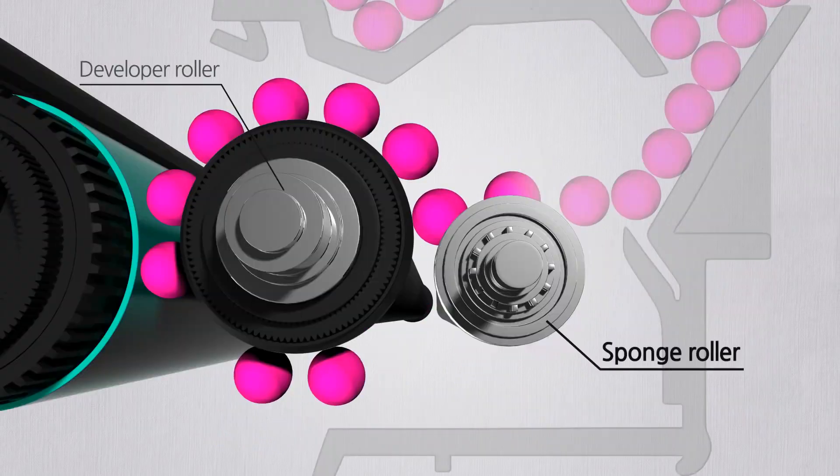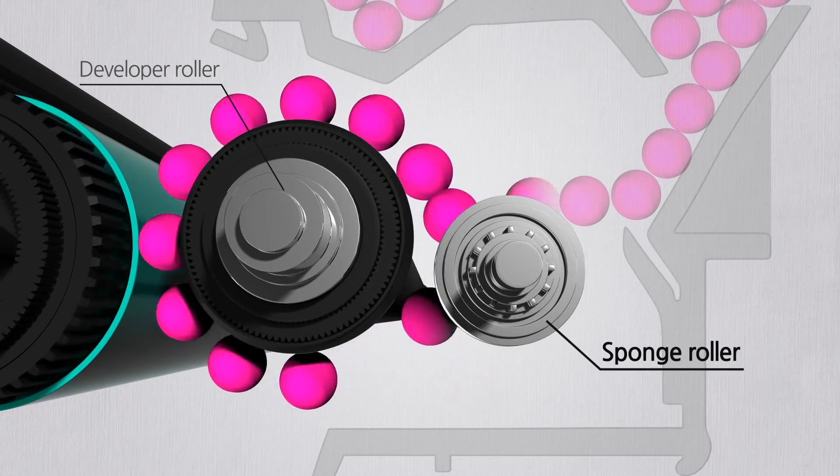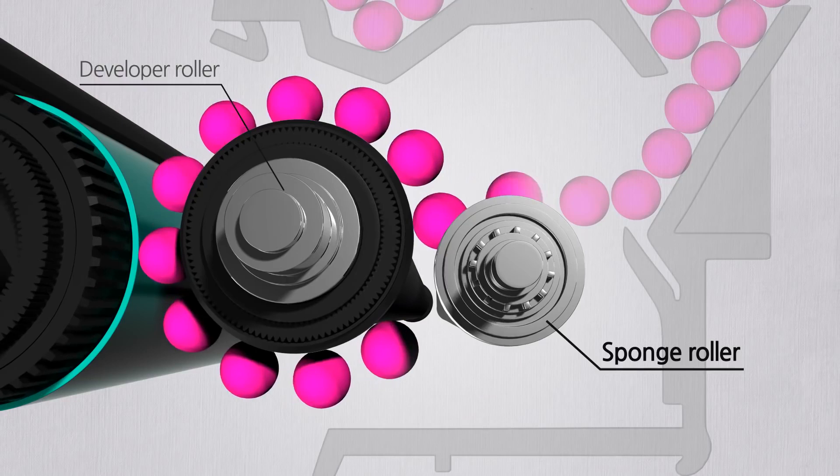Next to the developer roller lies a sponge roller. The sponge roller provides toner to the developer roller and cleans up toners that are not delivered to the drum.